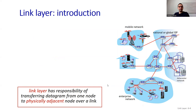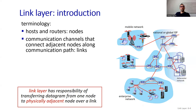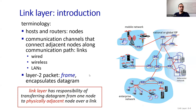The link layer has the responsibility of transferring data from one node to a physically adjacent node. Terminology: hosts and routers are called nodes. Communication channels that connect adjacent nodes along communication paths are called links, shown here in red lines. Links can be wired, wireless, or we can have local area networks.